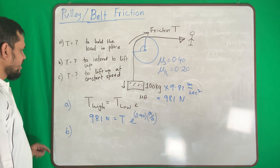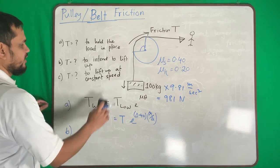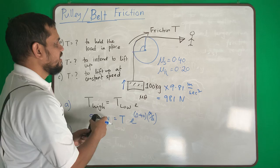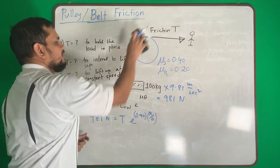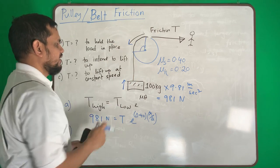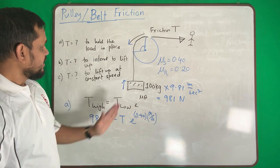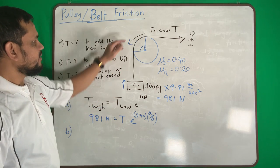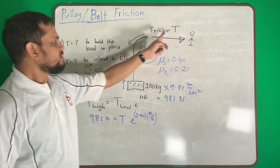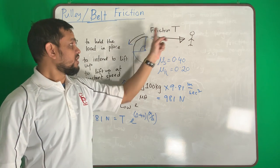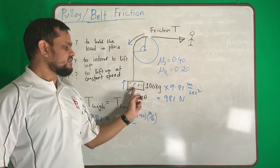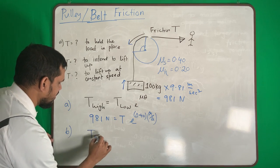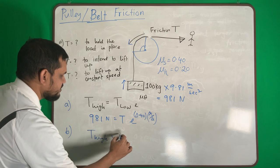Now number B: intent to lift up. That means my motion will be up. If my motion is up, my frictional force will be down. So the body will lift up, frictional force will be down, so my T should exceed friction and exceed this load. So my T will be higher, T high.